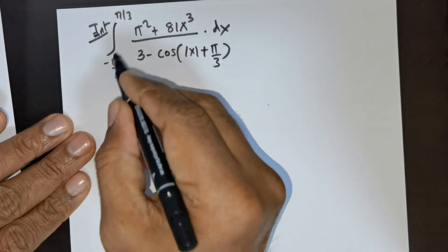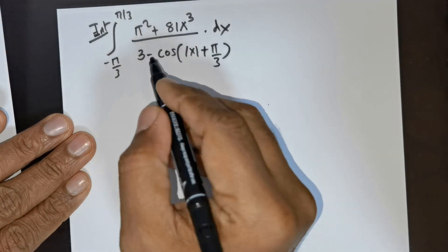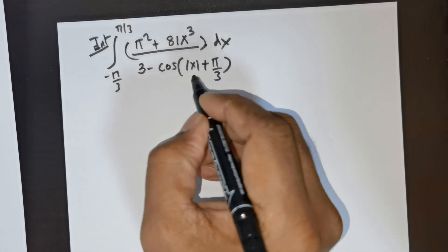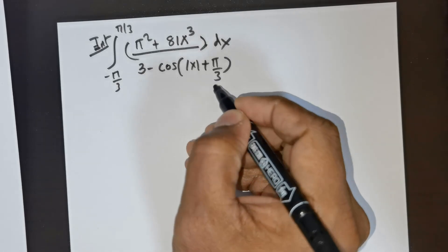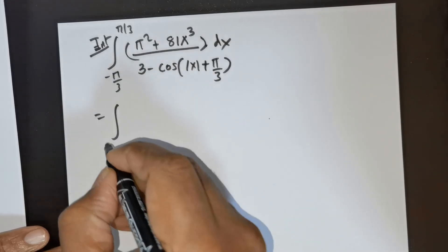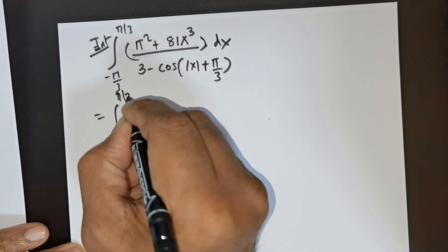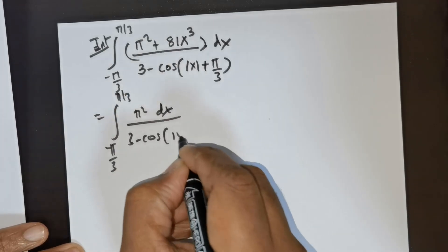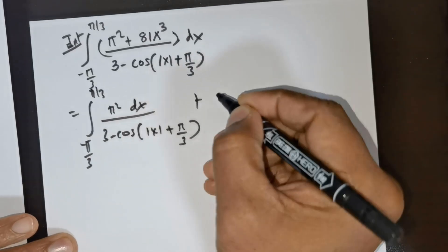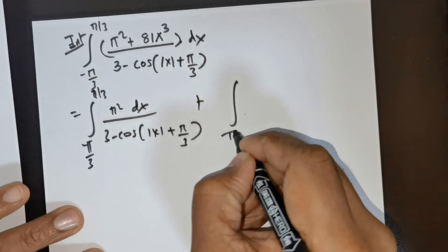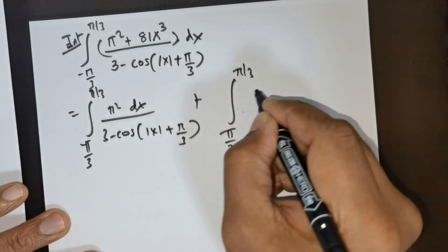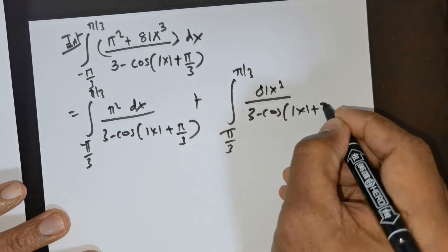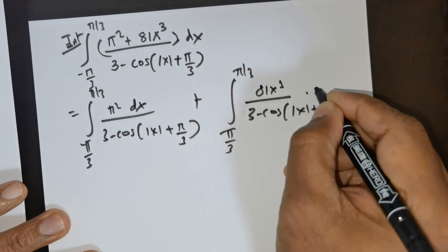Welcome students. We are expected to integrate the integral from negative π/3 to π/3 of π² plus 81x³ multiplied by dx divided by 3 minus cos(|x| + π/3). I would like to rewrite this as the integral from negative π/3 to π/3 of π² dx divided by 3 minus cos(|x| + π/3), plus the integral from negative π/3 to π/3 of 81x³ divided by 3 minus cos(|x| + π/3) times dx.